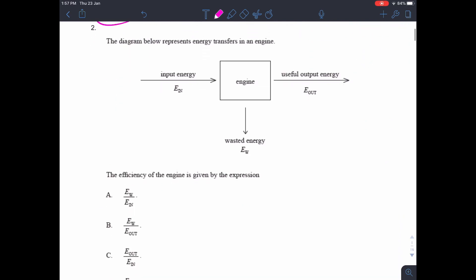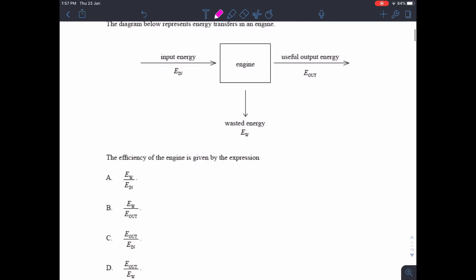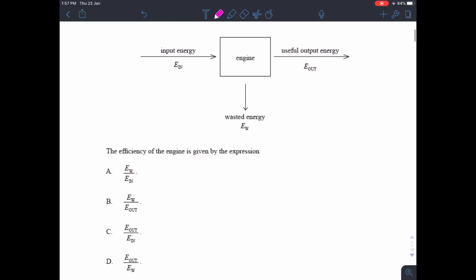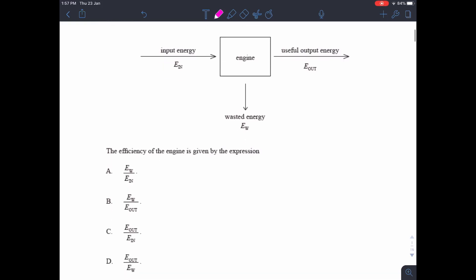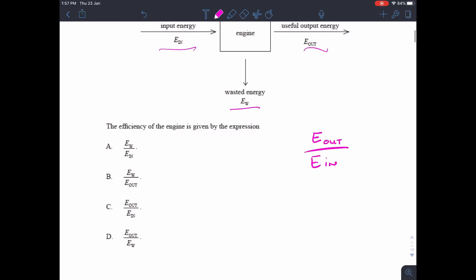Question 2. Energy transfers in an engine. This is just simply rearranging or using your efficiency formula. So you have the output energy here, the wasted energy here, and the input energy here. Efficiency is just energy out divided by energy in, times 100 if you want to make that into a percentage. But here we've got energy out divided by energy in, which is C.